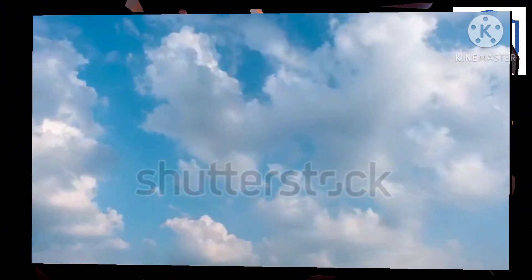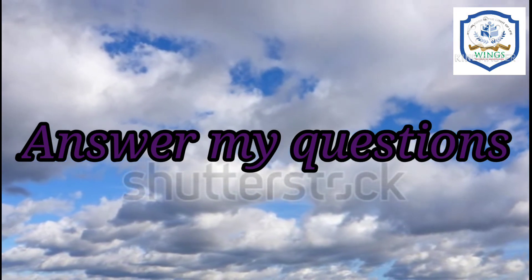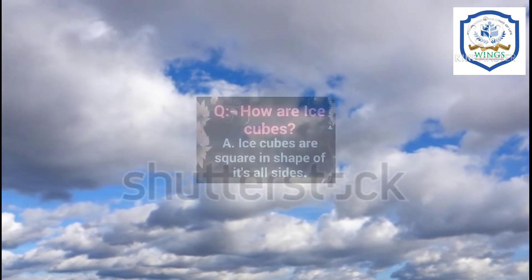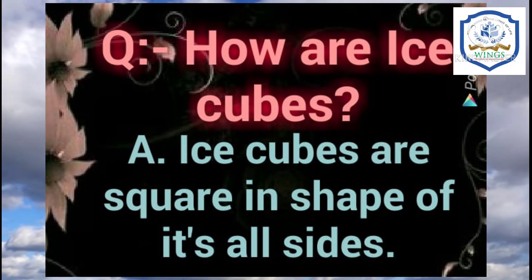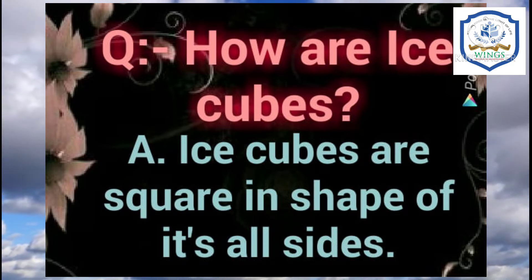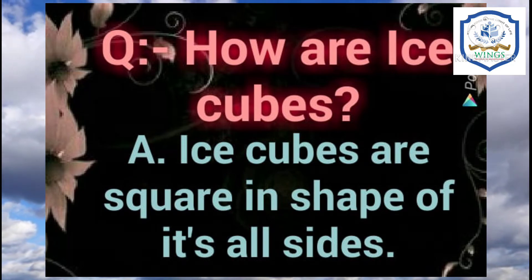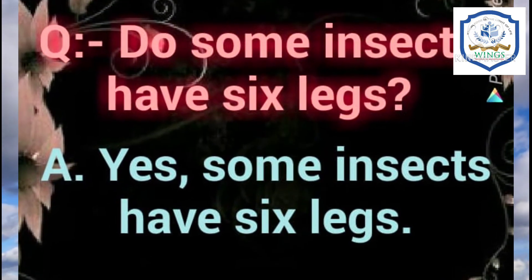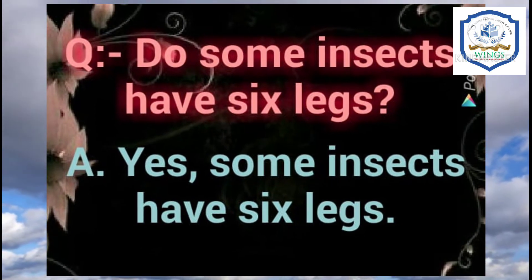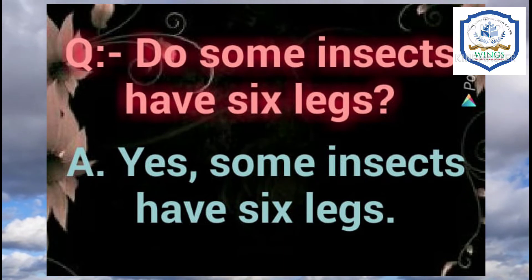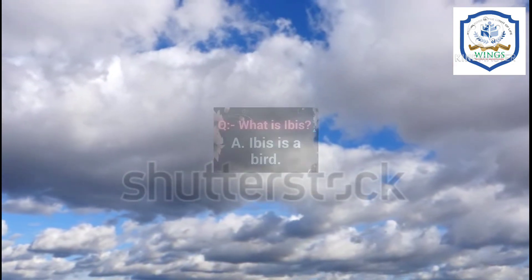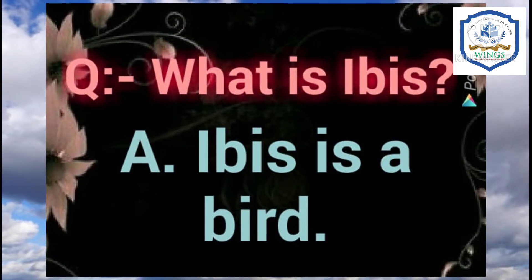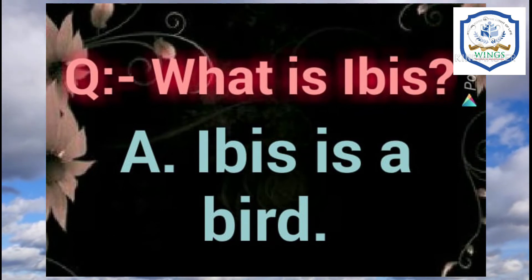Now let's begin the oral practice which is mentioned at the bottom of the page. Answer my questions. The first question is: how are ice cubes? Answer: ice cubes are square in shape on all sides. Next question: do some insects have six legs? Answer: yes, some insects have six legs. Next question: what is ibis? Ibis is a bird.